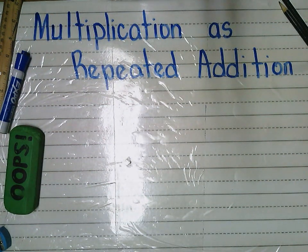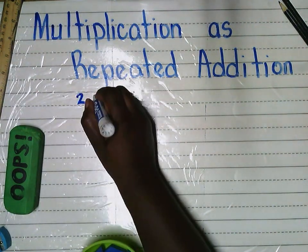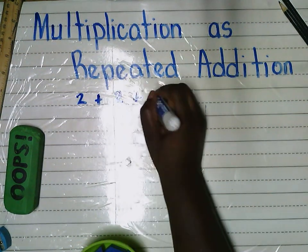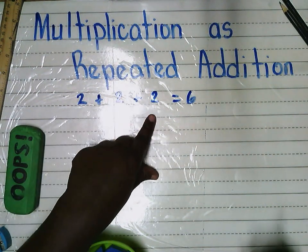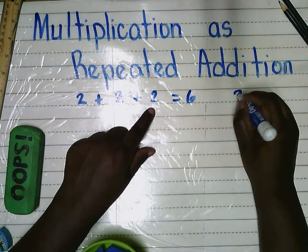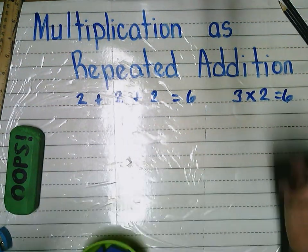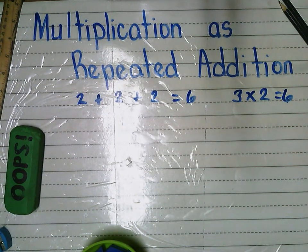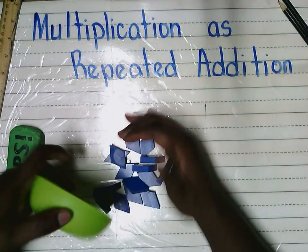Multiplication is like addition because we can use either one to combine equal groups. If I have two plus two plus two, that's six — I can skip count: two, four, six. I can also write that as multiplication: I have three groups and each group has two, so three times two equals six. When we multiply, we combine equal groups to find out how many there are in all.